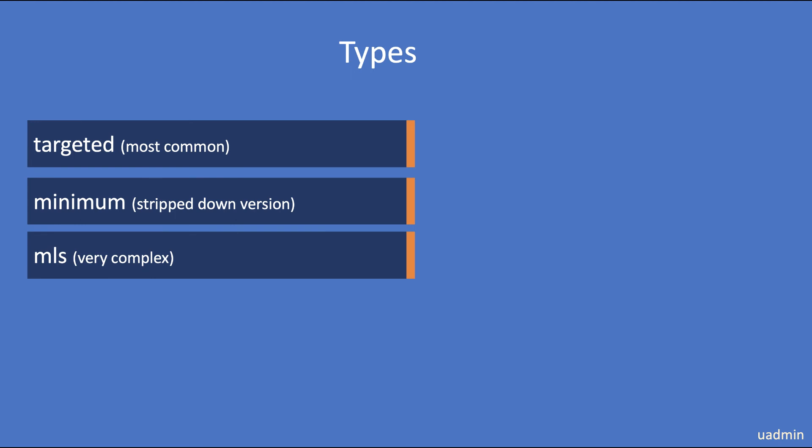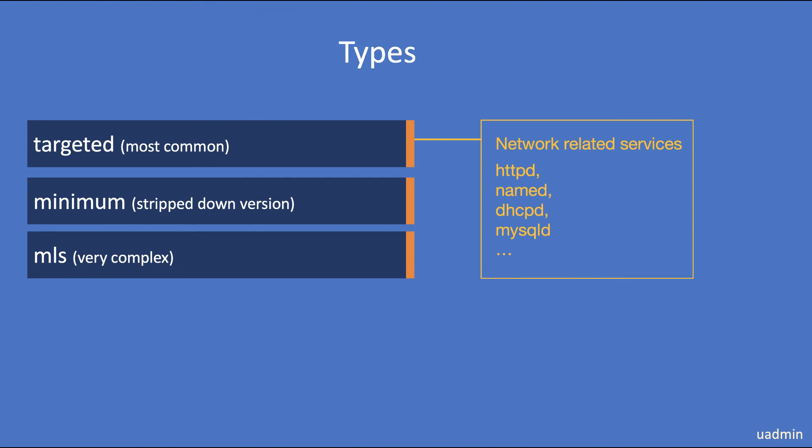Now let's look at SELinux types. Most implementations use the targeted type. A very small percentage of organizations use the multi-level security type, which is very complex — next to context types it also works with users, roles and levels, and everything has to be set up from scratch. The minimum type is a stripped-down version of the targeted type. Targeted simply means that only domains targeted by SELinux will be subject to security checks, so in general network-related services like HTTPD and named are targeted. We'll concentrate on the targeted type as that is what you will most likely run into.